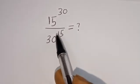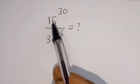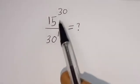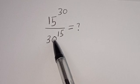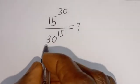Hello, how to simplify this nice math problem without using a calculator: 15 to the power of 30 divided by 30 to the power of 15. Solution.